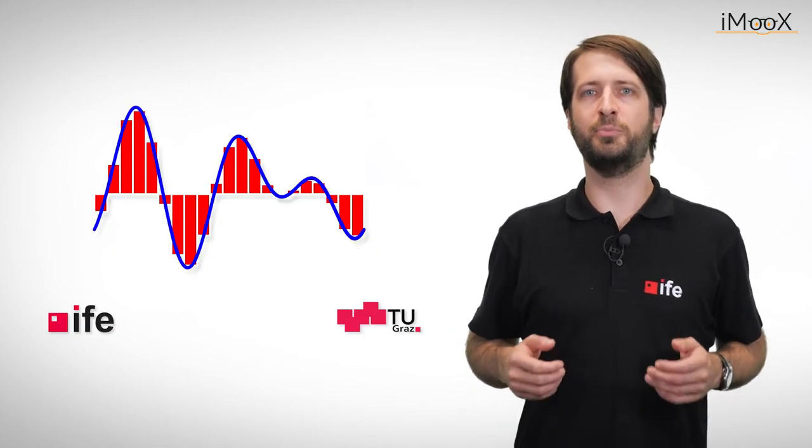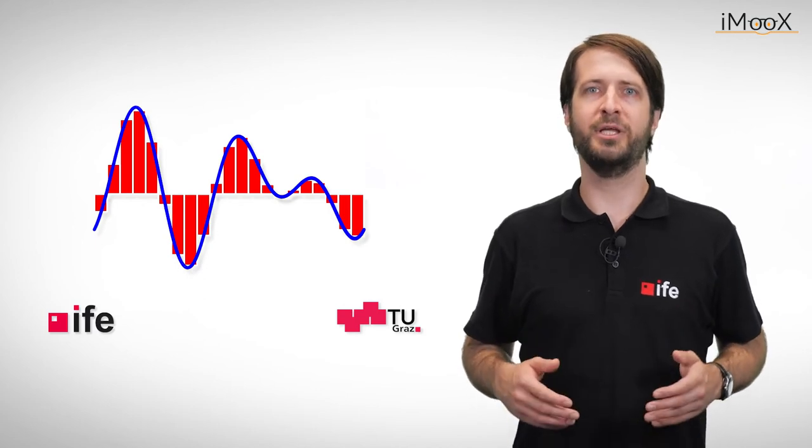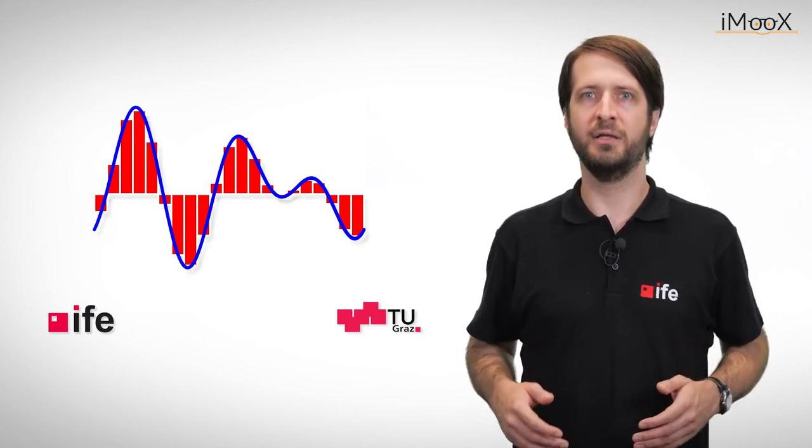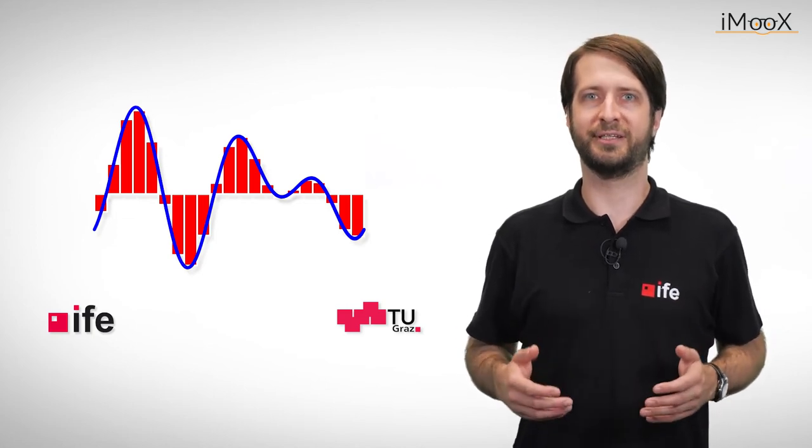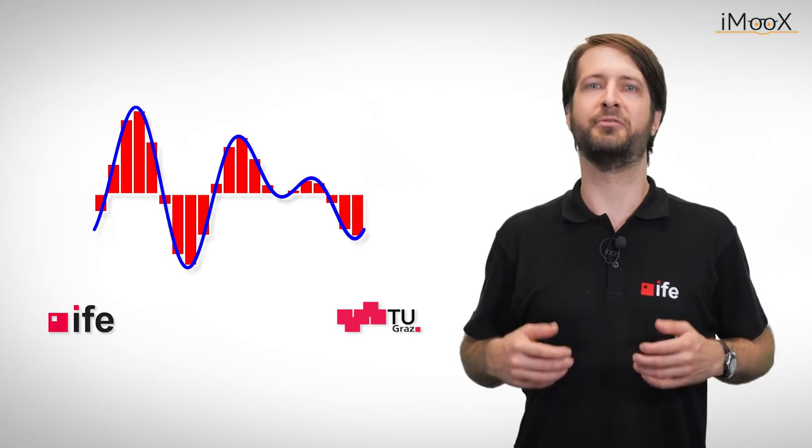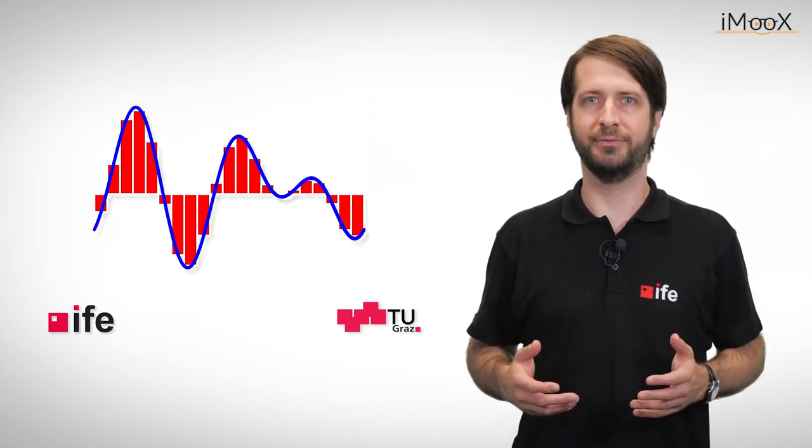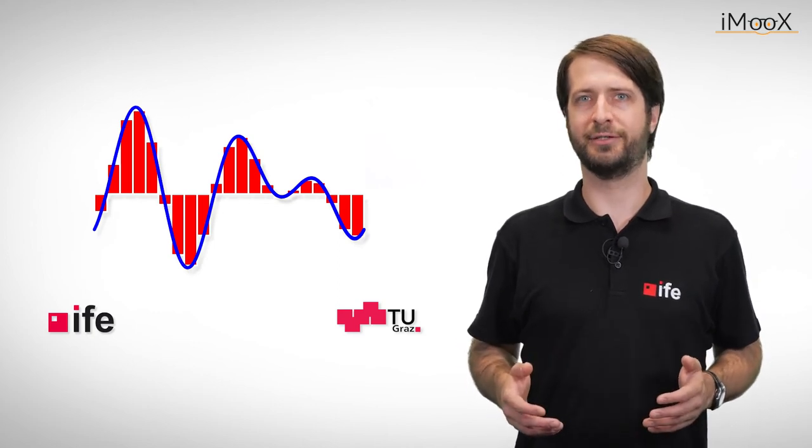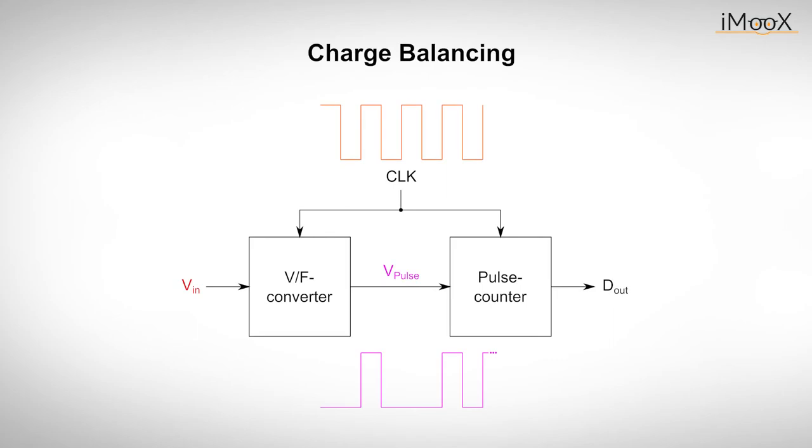In addition to dual slope integration, there are many other integration methods. We cannot go into all of them in detail. So, let's just take a look at another converter technique, which is the basis to understand the royal class of ADC integration in our next video. Let's meet the charge balancing integrator. A charge balance ADC is basically a voltage to frequency converter. The input voltage is converted into a pulse sequence, whose frequency is measured by a counter and converted into an output code proportional to the analog input signal. The main advantage of these converters is the possibility to transmit frequency signals even in a noisy environment.